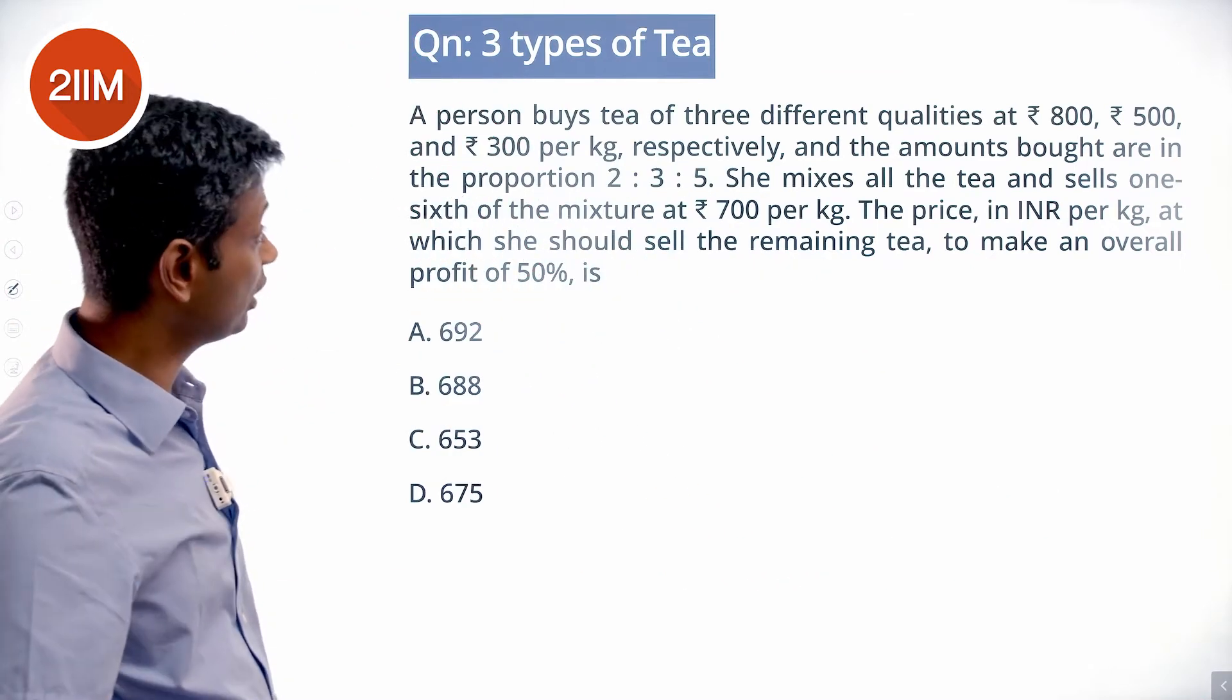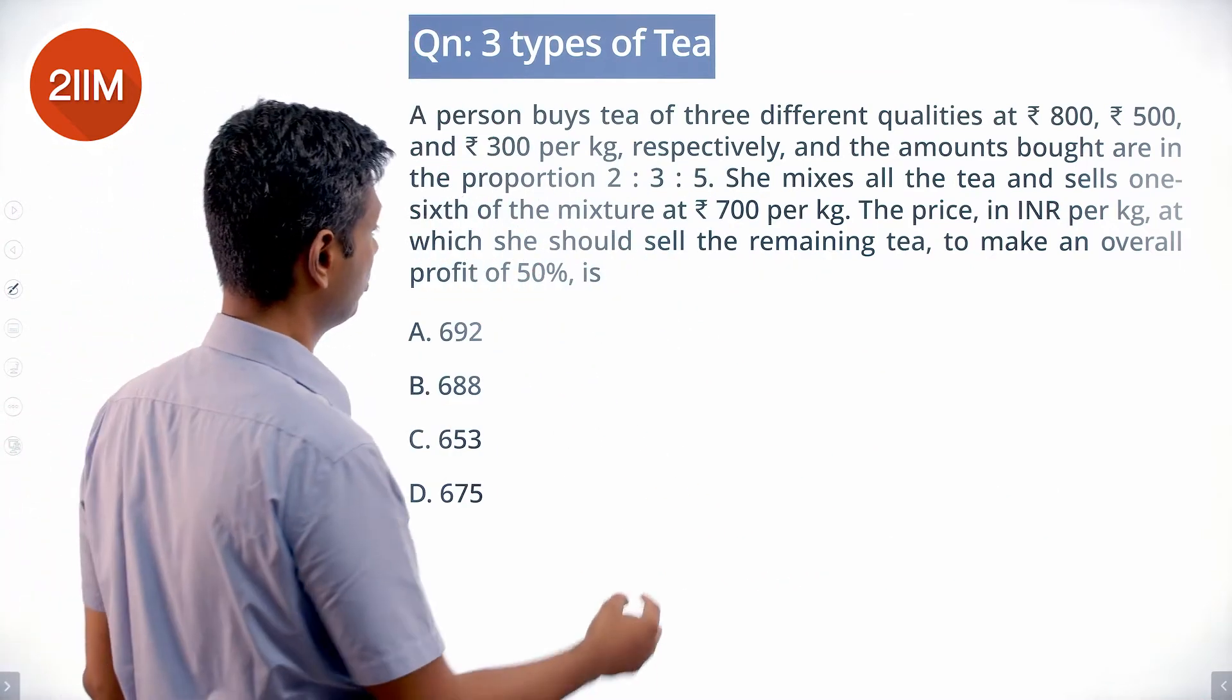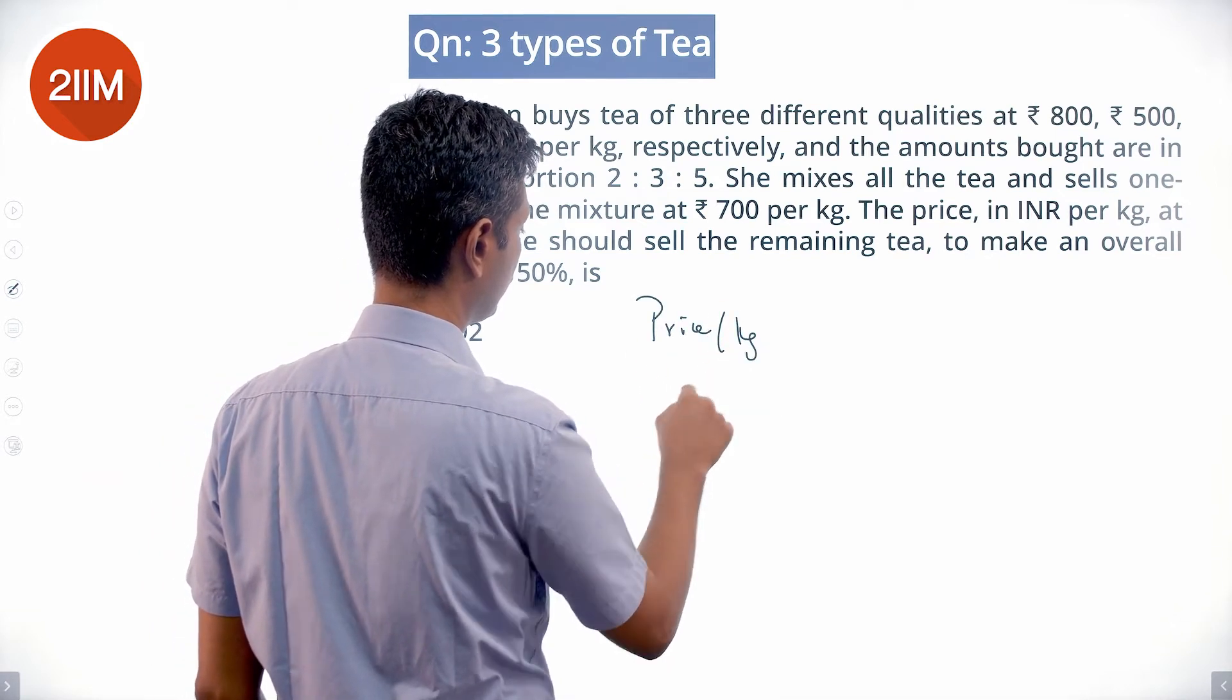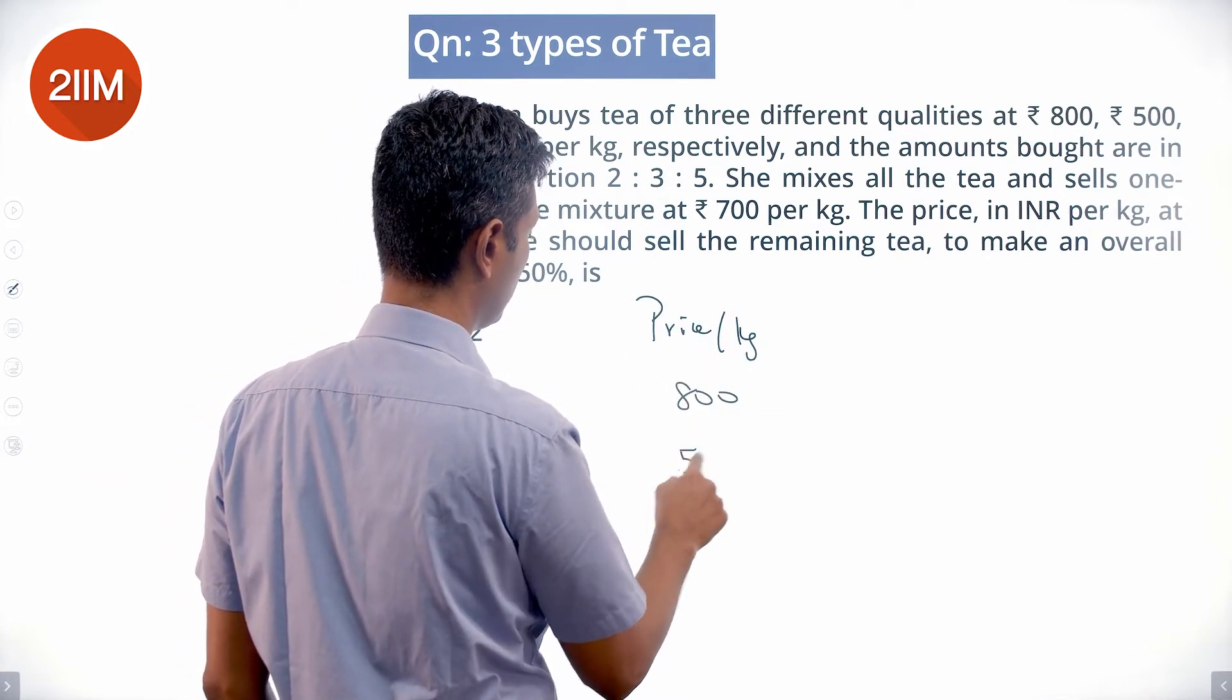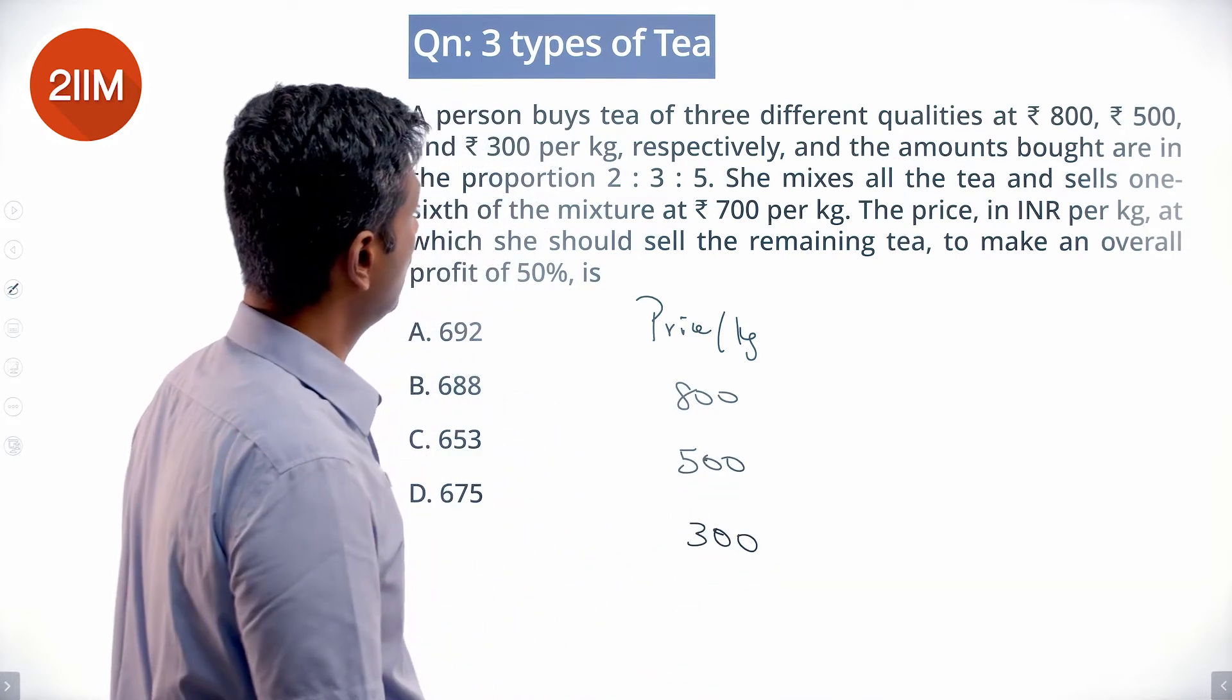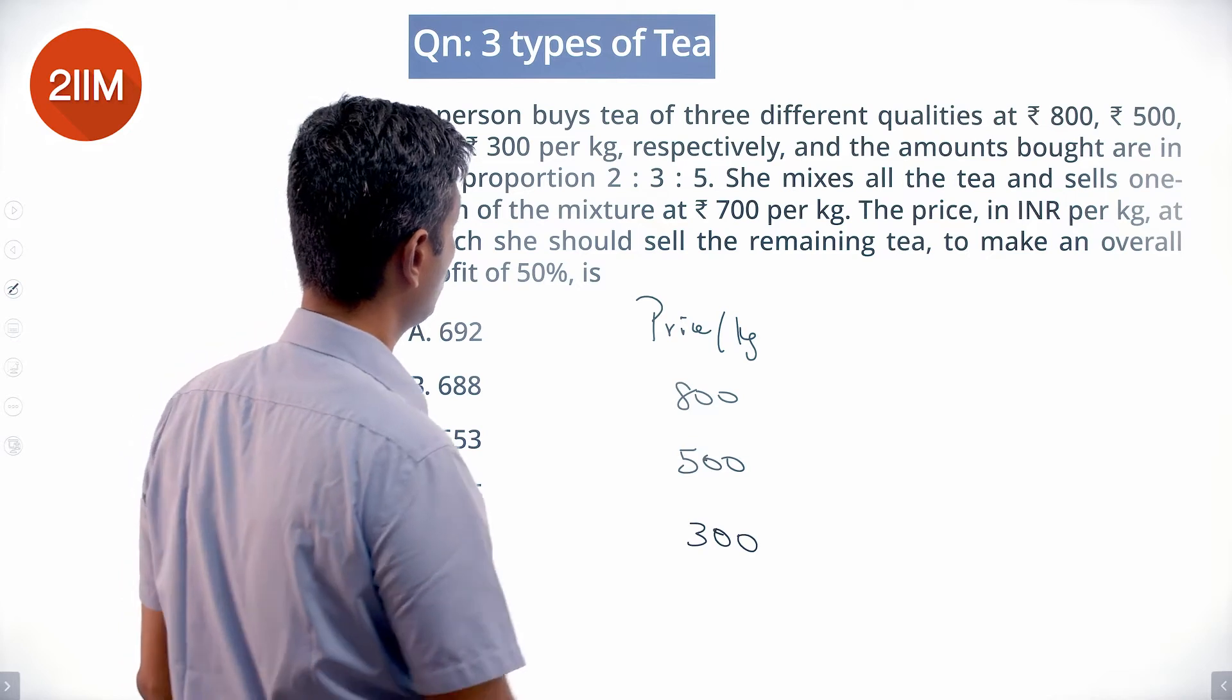A person buys tea of three different qualities at 800, 500, and 300 per kilogram, and the amounts bought are in the ratio 2:3:5.